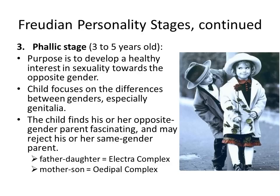For example, little girls are often fascinated watching their daddy shave in the morning, while little boys may become fixated on watching mom put on pantyhose and lipstick. When a young man becomes obsessed with an older woman or a young woman with an older man romantically, we get into some abnormal behavior. At the abnormal level, the father-daughter dynamic is called the Electra complex, and the mother-son dynamic is called the Oedipal complex.